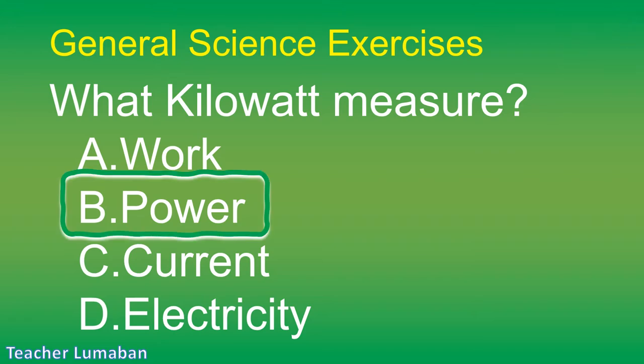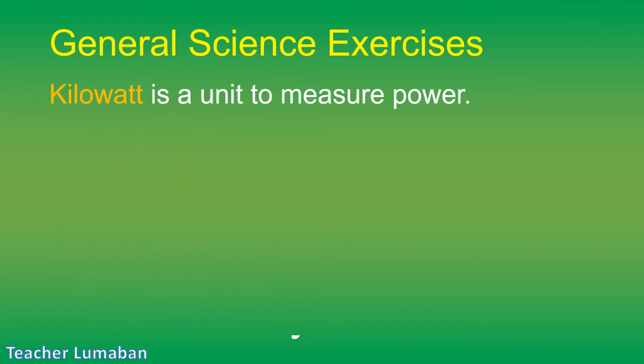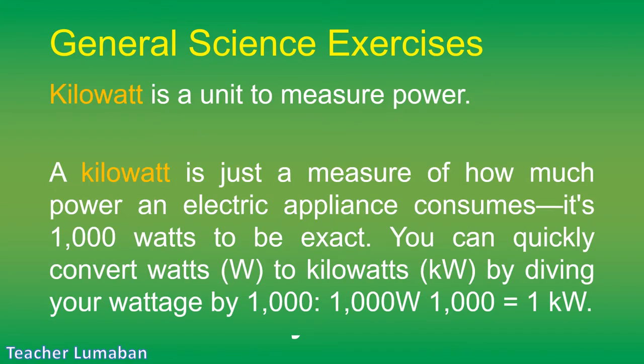The correct answer is Letter B: power. Kilowatt is a unit to measure power. A kilowatt is a measure of how much power an electric appliance consumes — it's 1000 watts to be exact. You can quickly convert watts to kilowatts (kW) by dividing your wattage by 1000: 1,000 W ÷ 1000 = 1 kilowatt.